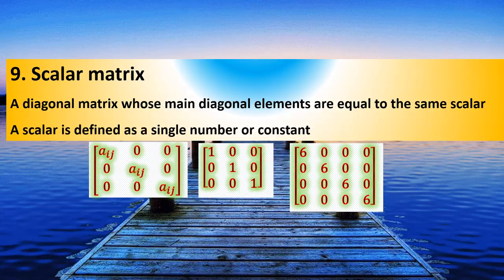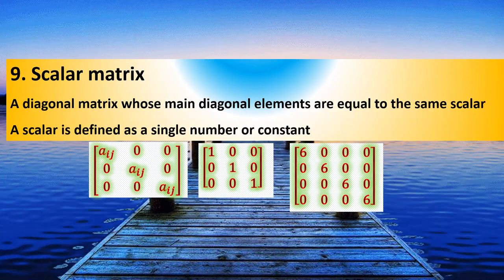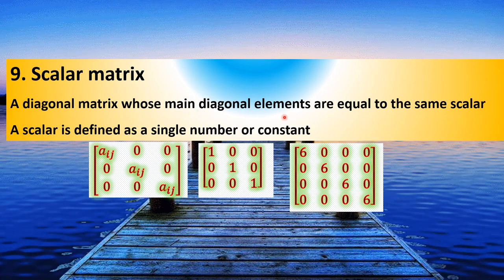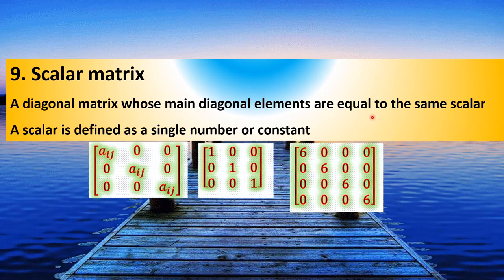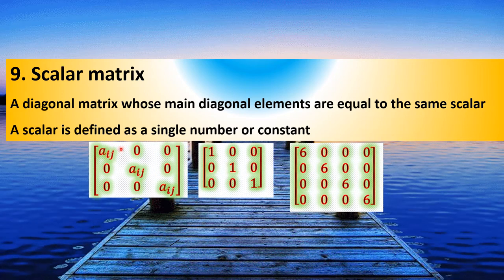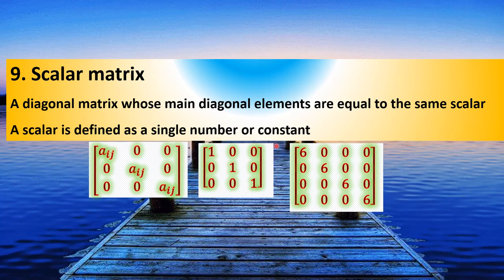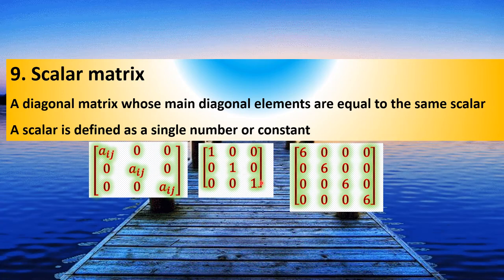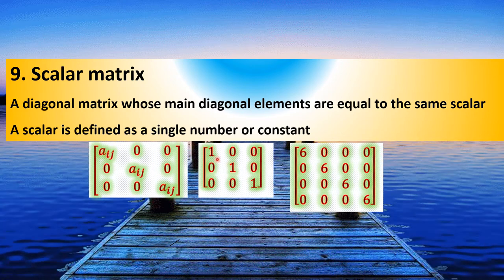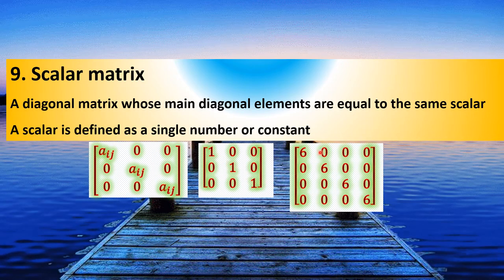This is the scalar matrix. The scalar matrix is a type of diagonal matrix where all the main diagonal elements are equal to the same scalar value. A scalar is defined as a single number.